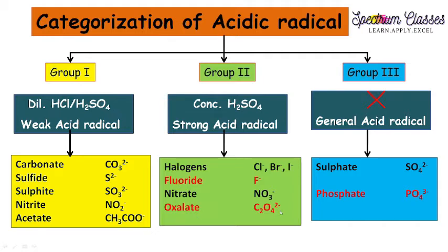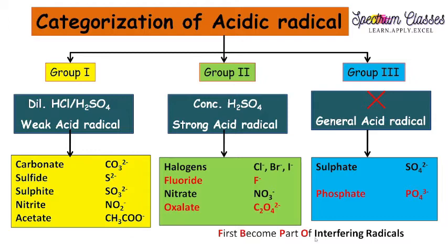I have highlighted three acid radicals in red. These are the interfering radicals: fluoride, oxalate, phosphate, and borate. To memorize these interfering radicals, I have written a sentence where the first letters help you recall them — F for fluoride, B for borate, P for phosphate, O for oxalate. These four are the interfering radicals.